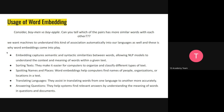Embeddings capture the semantic and syntactic similarities between words, which allows NLP models to understand the context and meaning of words within text. Some use cases of embedding: sourcing and classification — they make it easier for computers to organize and classify different types of text. Spotting names and places — embeddings can help computers find names of people, organizations, and locations in text. Translating language — they assist in translating words from one language to another more accurately. And answering questions — they help systems find relevant answers by understanding the meaning of words in a question and document.